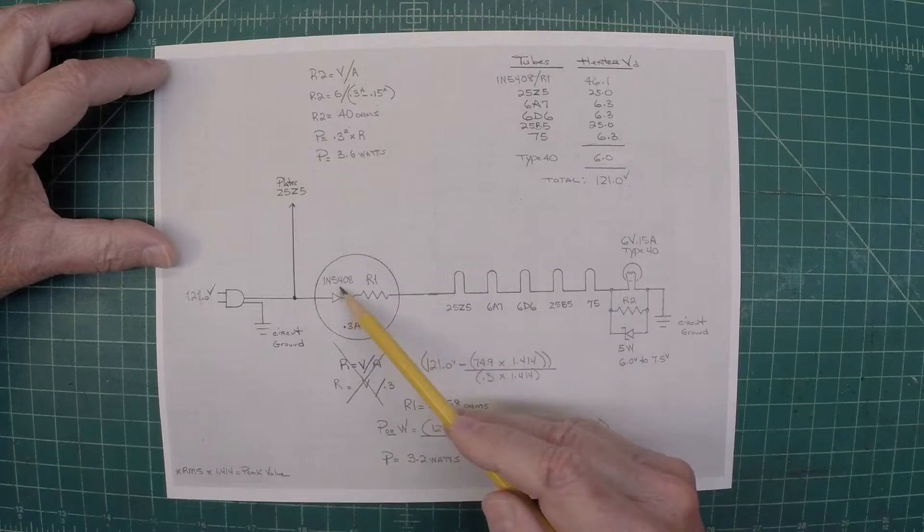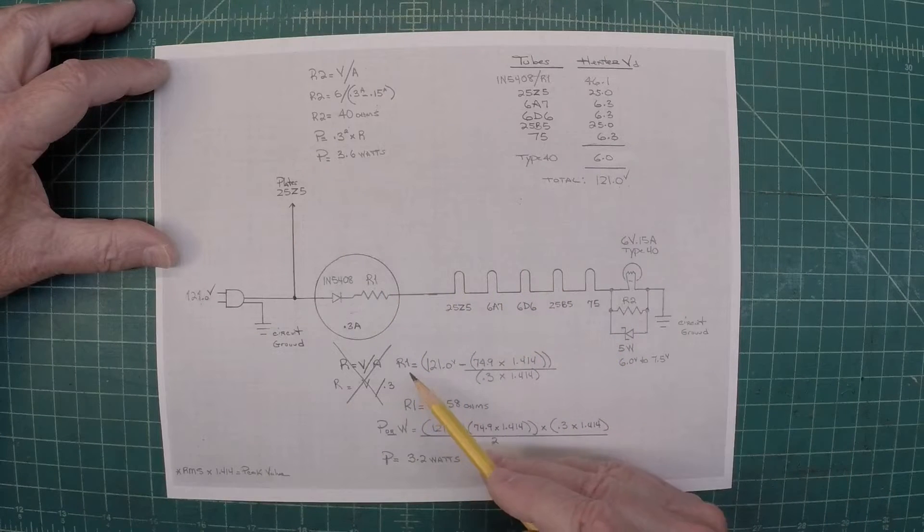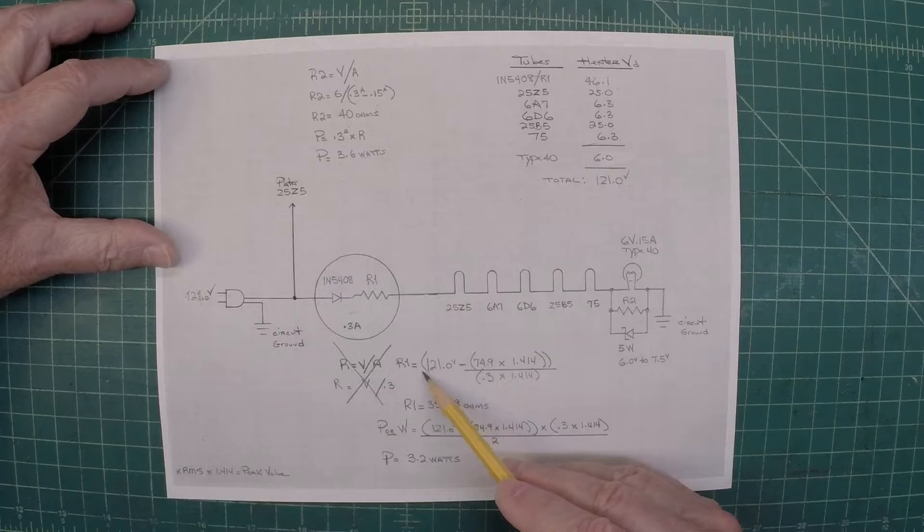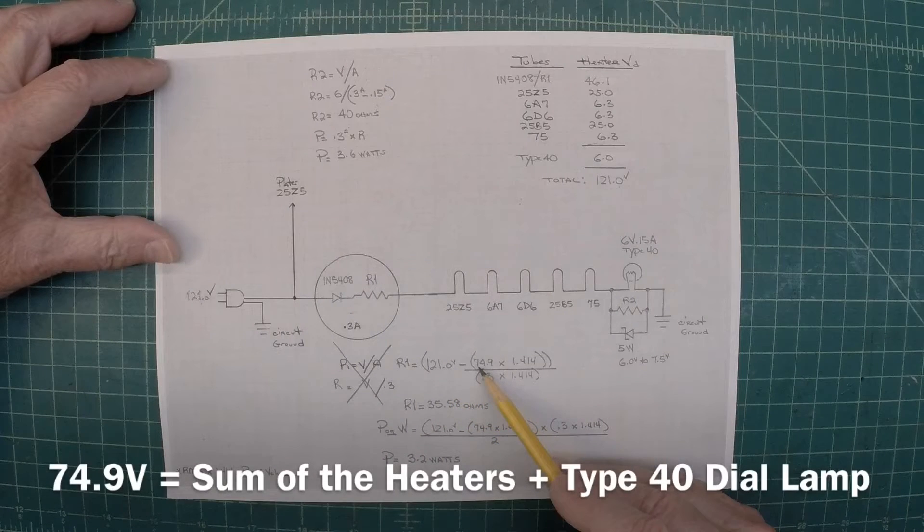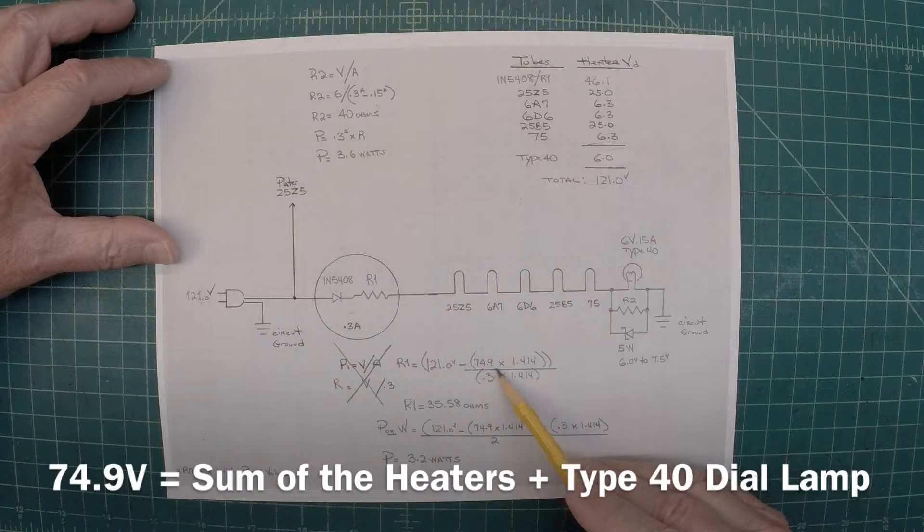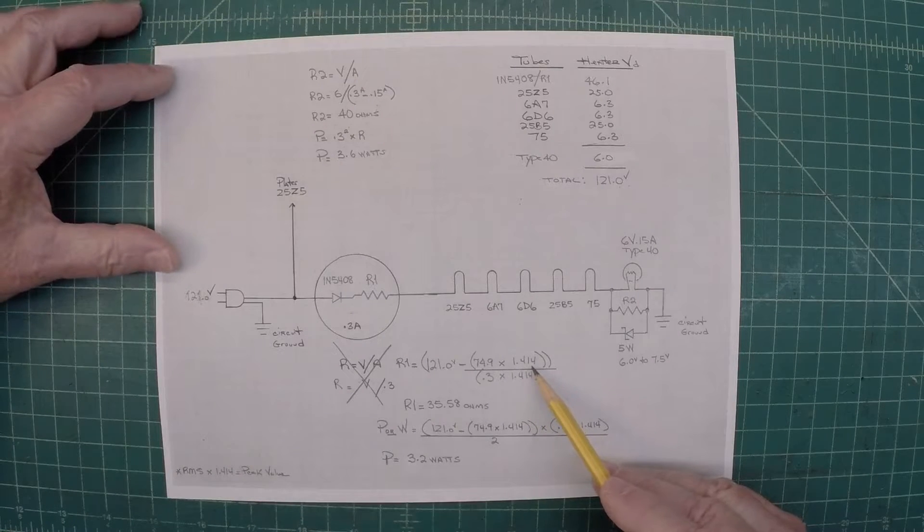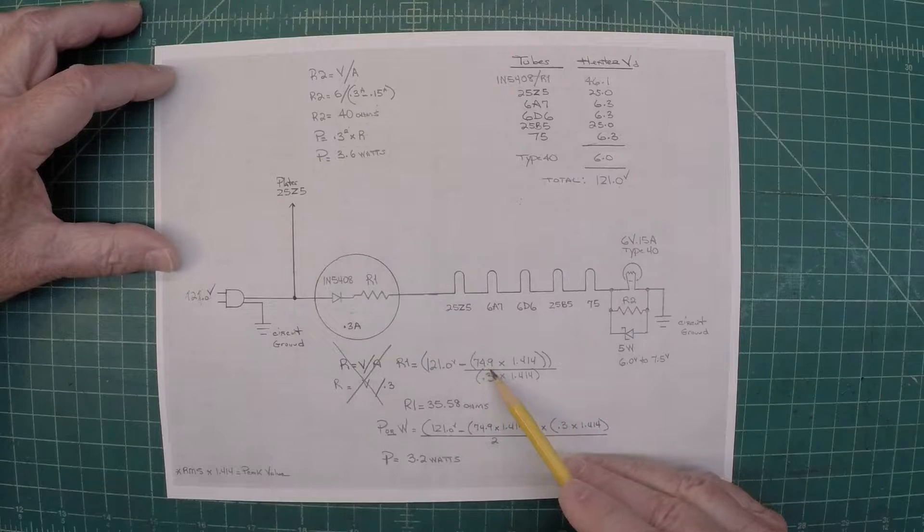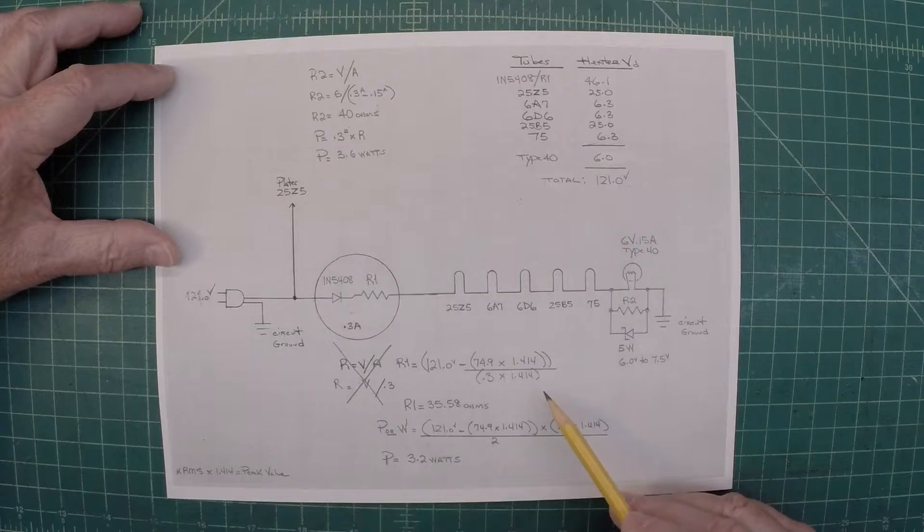So real quick, to calculate the voltage drop here across the diode itself in R1. R1, you can see, is equal to my 121 volts input minus the 74.9 volts that I need to drop in total times 1.414. So everything's looking at peak power. So I'm just taking the RMS voltage times 1.414 to get peak. Doing the same thing for the current.